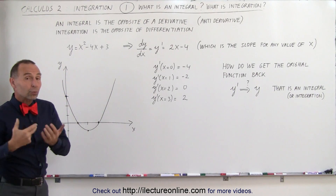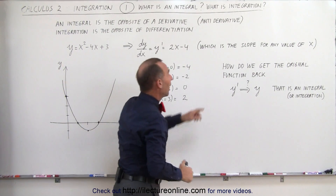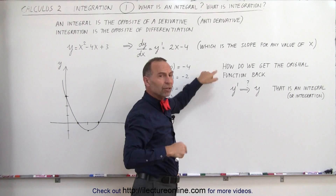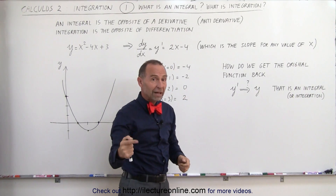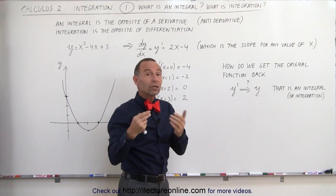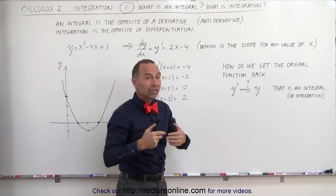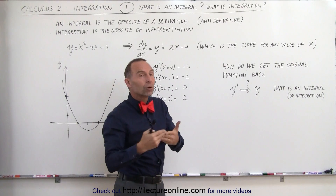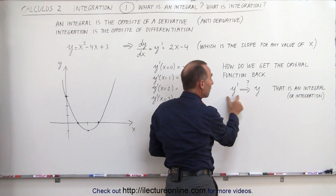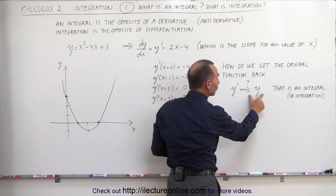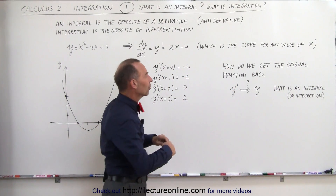Now let's say that we start with the derivative y prime equals 2x minus 4. How do we get back to the original function? If someone gives you the derivative of a function and asks you to find the function, what you need to do is go backwards — that's the opposite of differentiation. You need to integrate; you need to find the integral of that. So to go from y prime, which is the derivative, back to the original function, we need to do an integration.